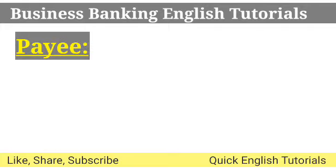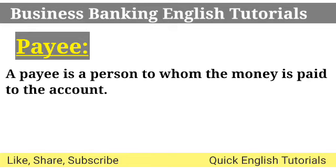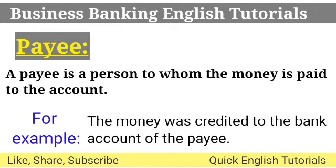The tenth word is payee. Payee is a person to whom the money is paid to the account. For example, the money was credited to the bank account of the payee.